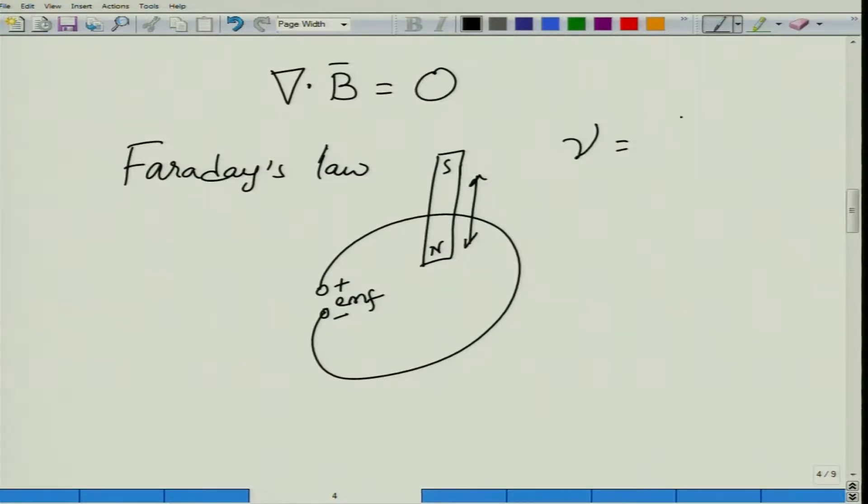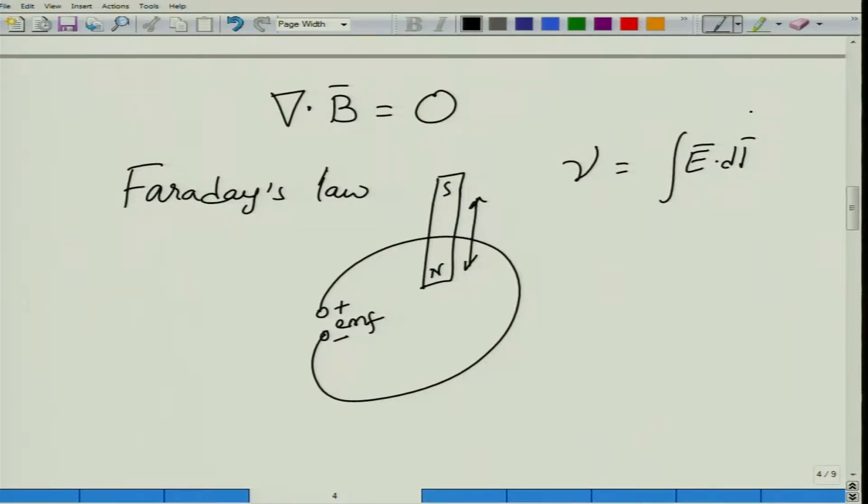Do not worry what that quantity is. If I take a particular closed path or take a path, then over that path, whatever the line integral of electric field that I am going to obtain is what by definition is this particular quantity V.